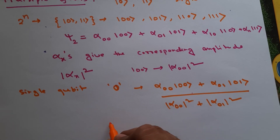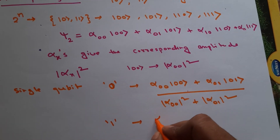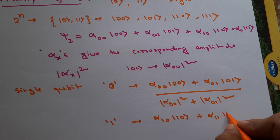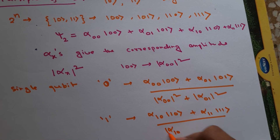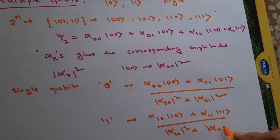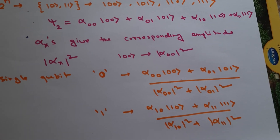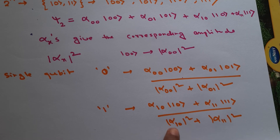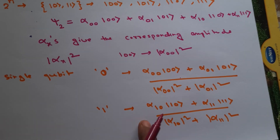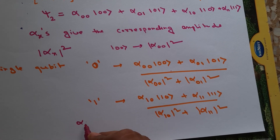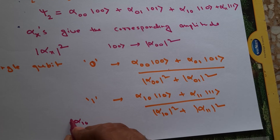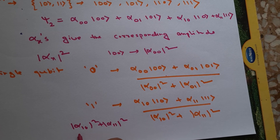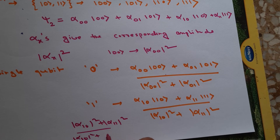For the single qubit measurement outcome of 1, the state is alpha_10 |10⟩ + alpha_11 |11⟩ divided by |alpha_10|² + |alpha_11|². The states always have to be normalized, so the total probability becomes |alpha_10|² + |alpha_11|² divided by |alpha_10|² + |alpha_11|².